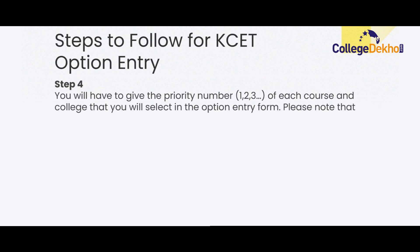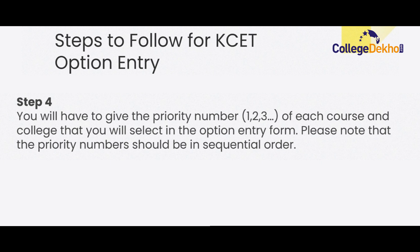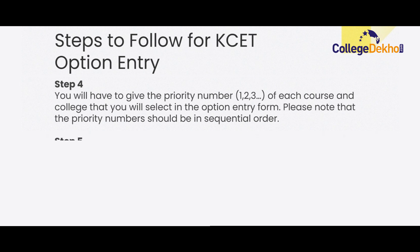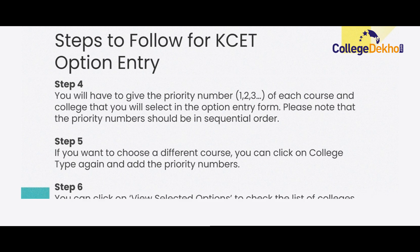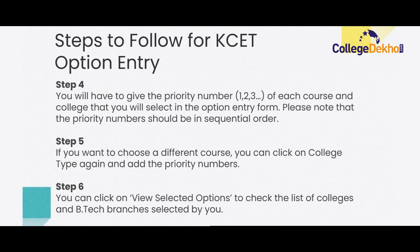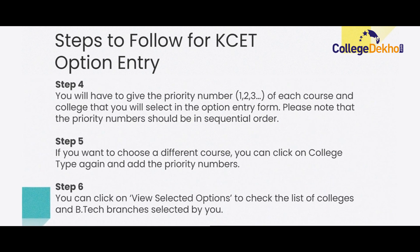For step four, you will have to give priority numbers — that is, one, two, three, and so on — for each course and college that you have selected in the option entry form. The college you most want to get a seat in should be given priority number one, and so on. Note that the priority numbers given to courses and colleges should be in sequential order. In step five, if you want to choose a different course, you can click on college type again and then add your priority numbers. For step six, the last step, you can click on 'View Selected Options' where you will check the complete list of colleges and branches that you have selected. You will have to confirm your options; if you don't confirm before the last date, the options chosen last will be automatically saved.